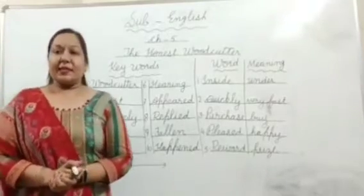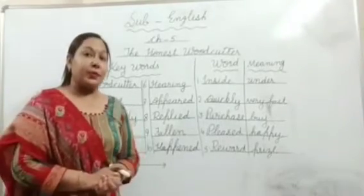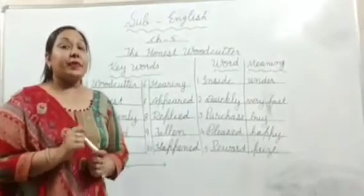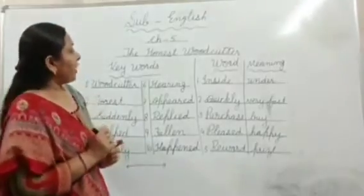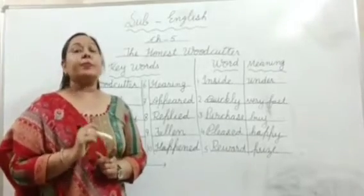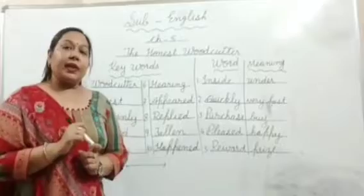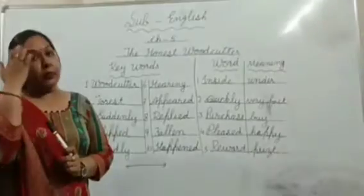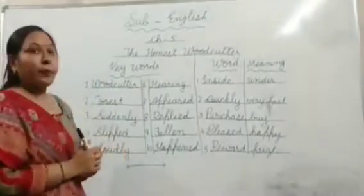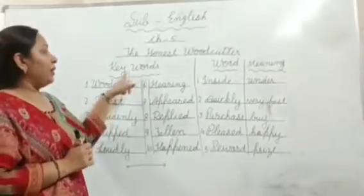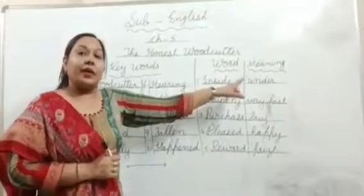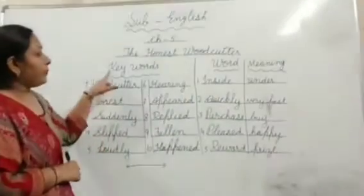Good morning dear students. Welcome you all in today's English online class. Dear kids, we have read chapter 5 of English reader, 'The Honest Woodcutter,' and we have done its book exercise also. Today we are going to do its keywords and word meaning. So look at the board very carefully. First of all, we will do keywords, and after that we will do word meaning. Let's start keywords.